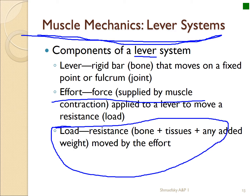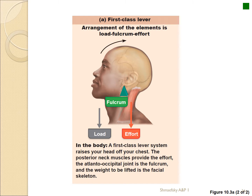The lever also has a load — this is where the muscle inserts, and represents the bone or tissue being moved along with whatever is associated with it. To understand how the fulcrum works, consider a first-class lever. In a lever system, the fulcrum is the point being moved around, the load is the direction of movement, and the effort is the force being applied to move that load.